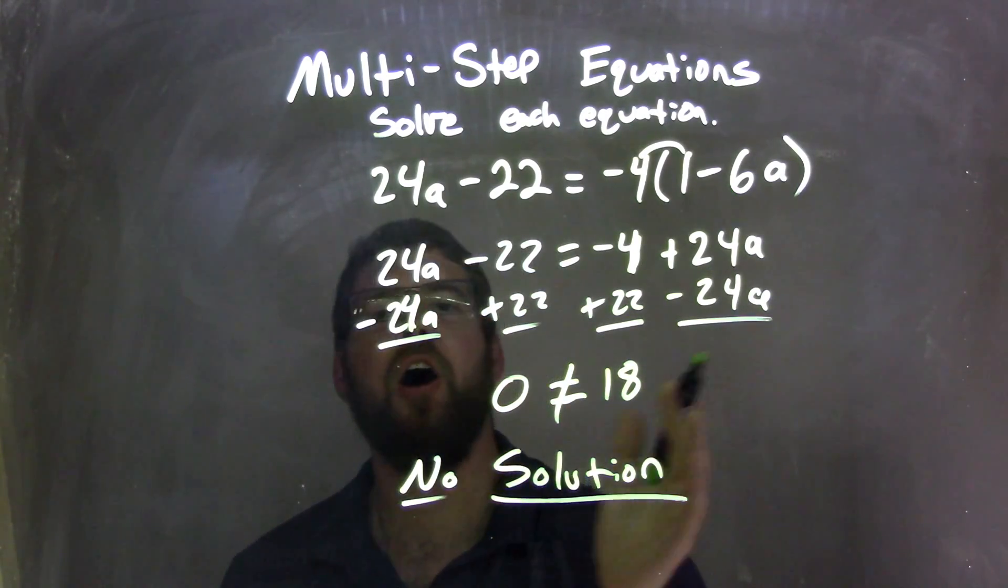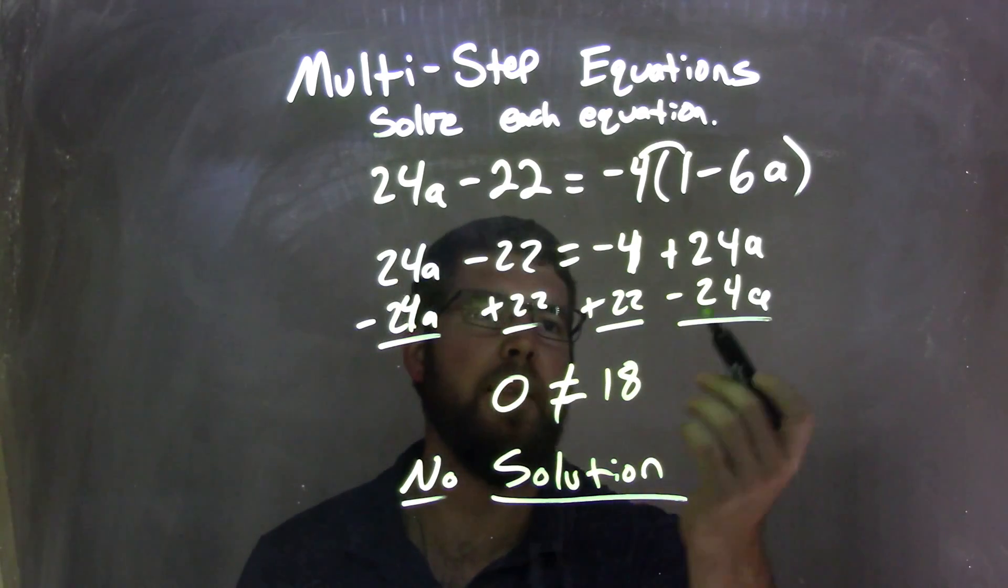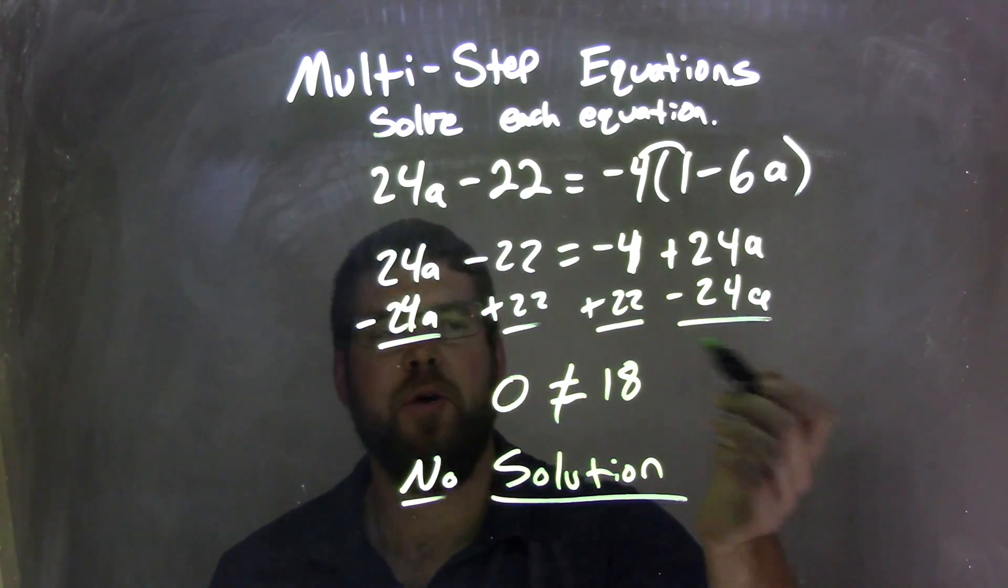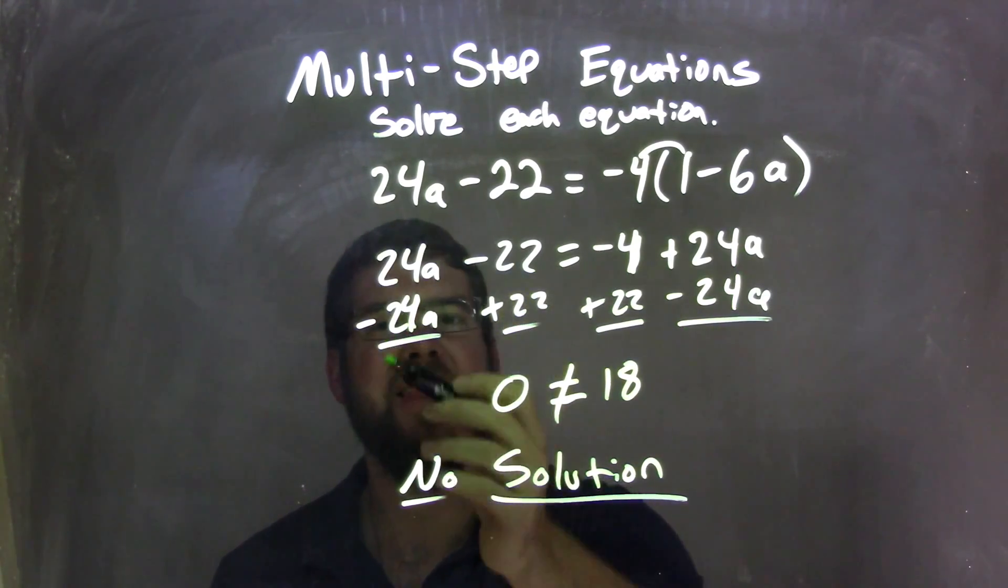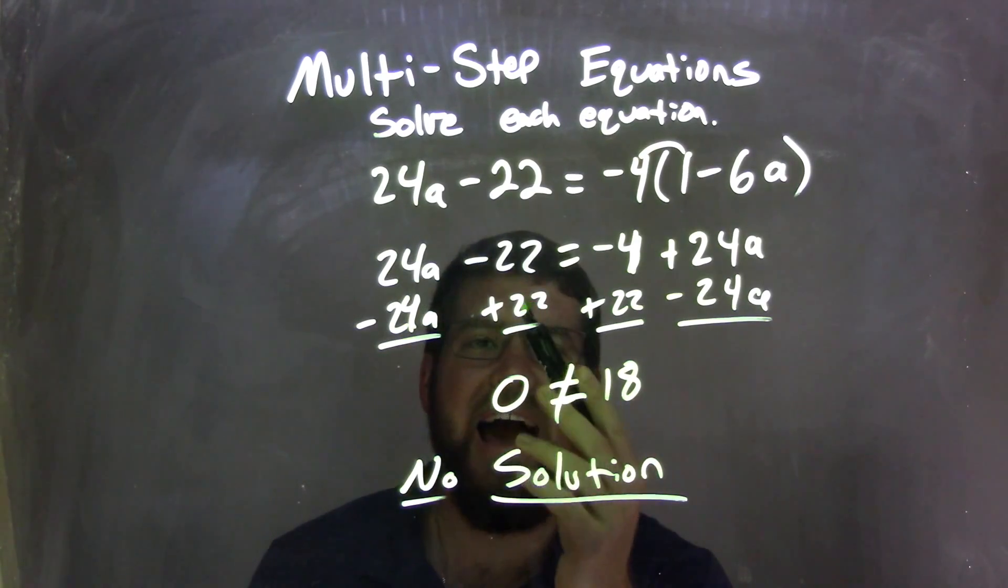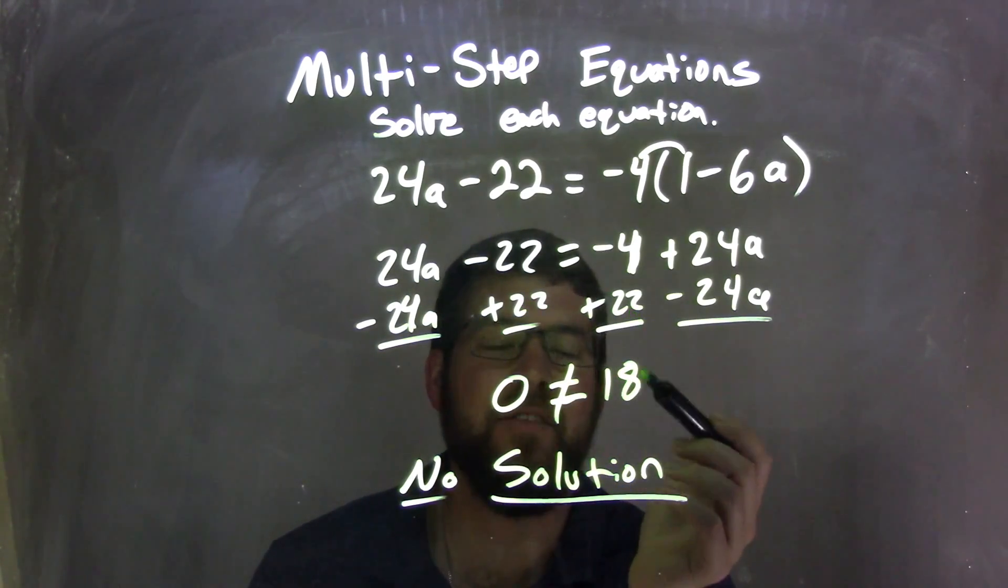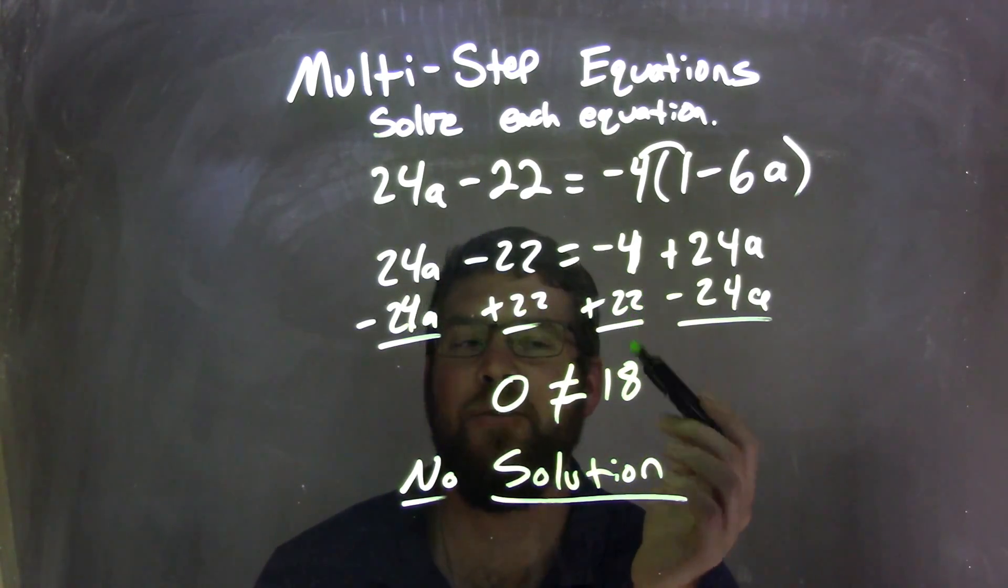I then brought all my letters to the left, numbers to the right. I subtracted 24a to both sides. That cancel gave me 0. I added 22 to both sides, giving me positive 18 on the right. Negative 4 plus 22 is positive 18.